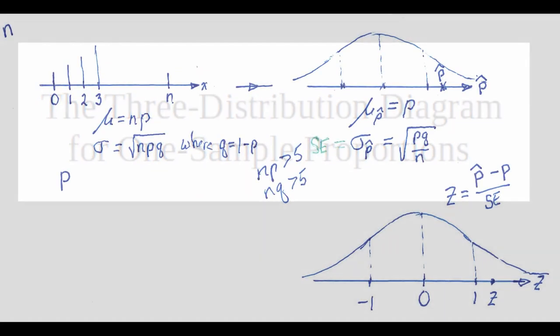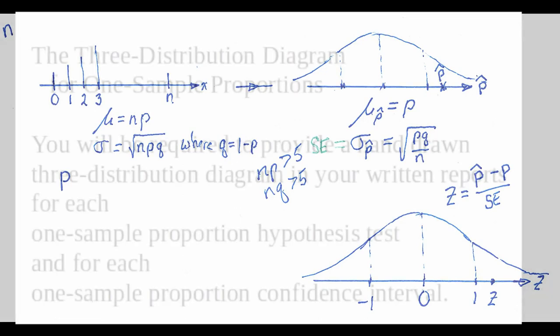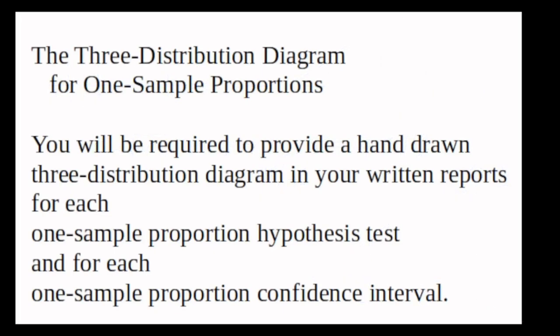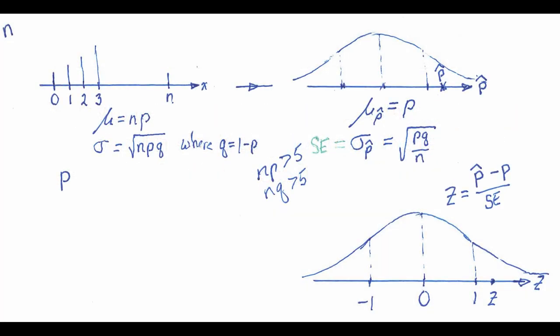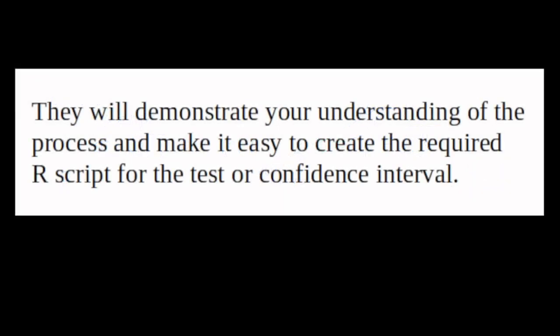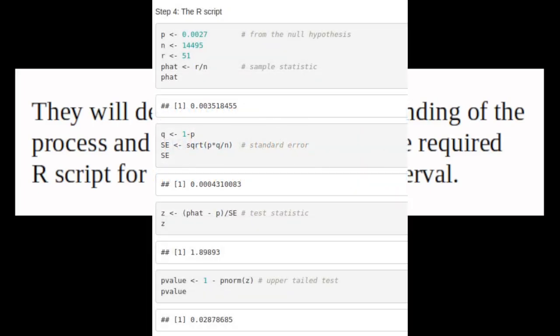In this video we're going to look at the three distribution diagram for one sample proportions. You will be required to provide a hand-drawn three distribution diagram in your written reports for each one sample proportion hypothesis test and for each one sample proportion confidence interval. These diagrams will demonstrate your understanding of the process and make it easy to create the required R script for the test or the confidence interval.